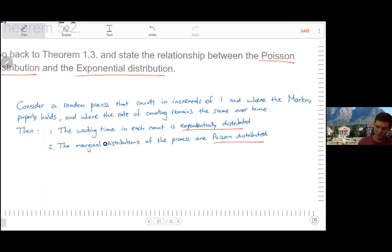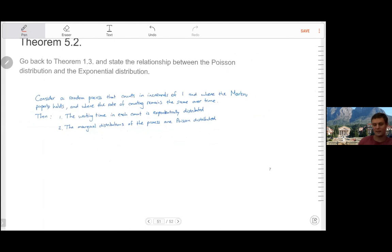And the marginal distribution of the process is a Poisson distribution. So both the Poisson and exponential distributions have a relationship with each other through the Markov assumption. Keep in mind that the Poisson distribution, exponential distribution is not a process. They're standard random variables, but there's a deep relationship between the two if you think about a Markov process.